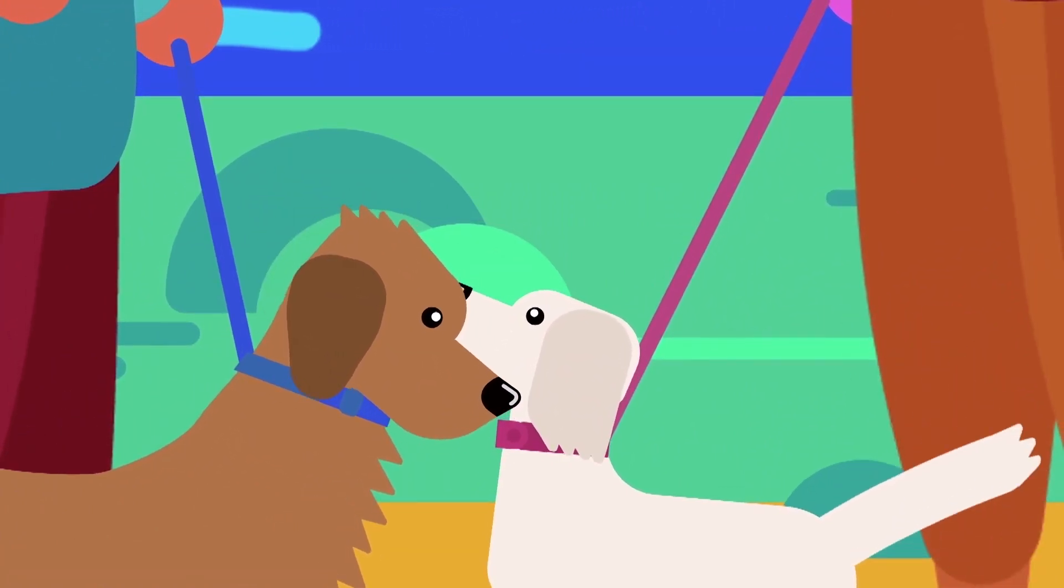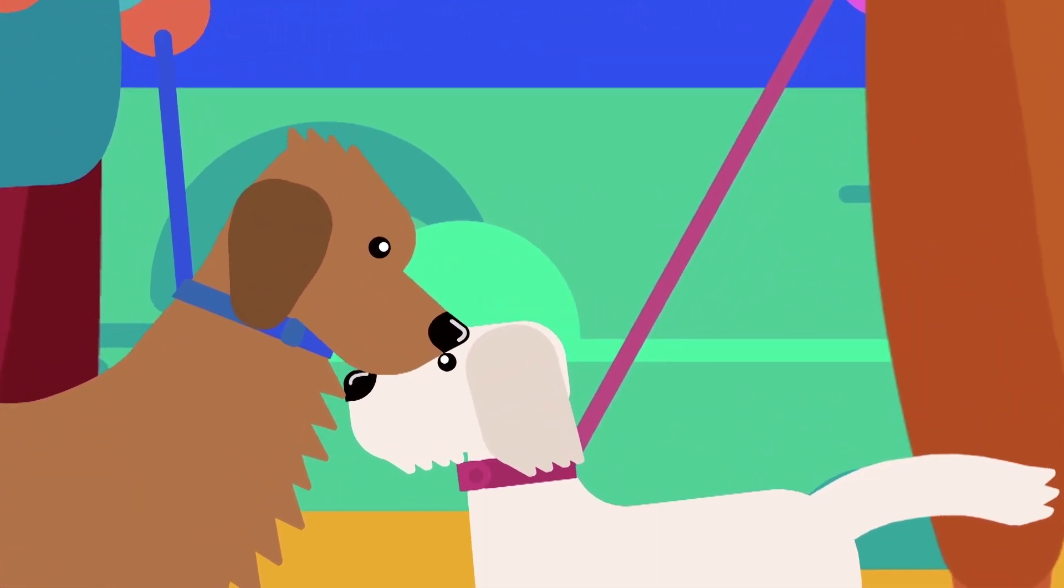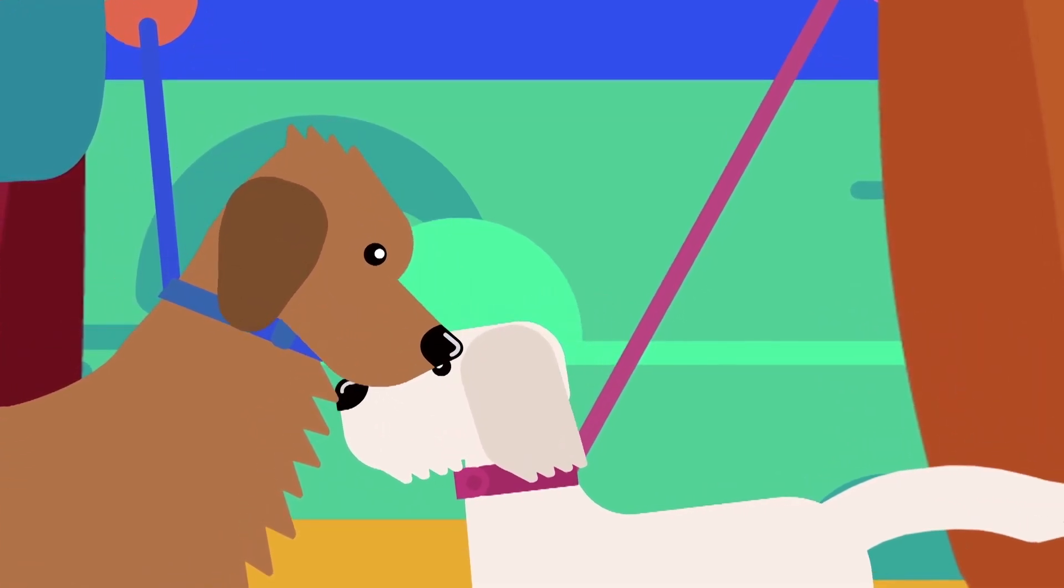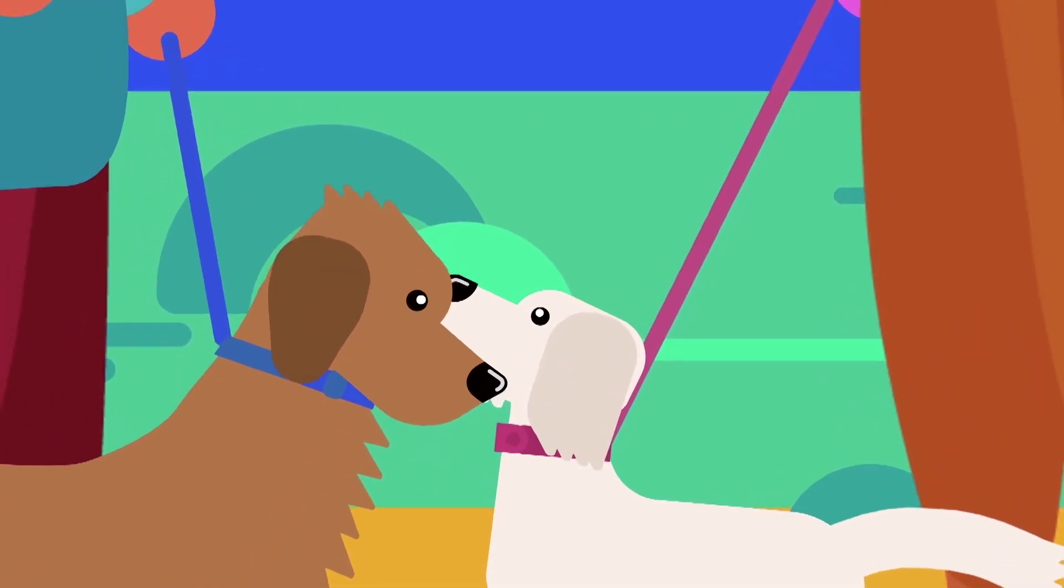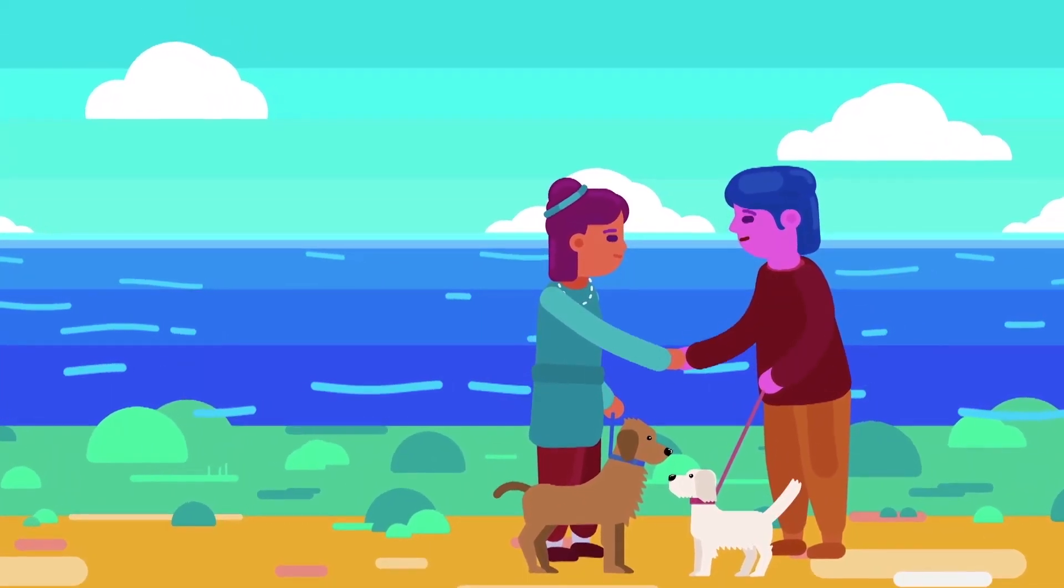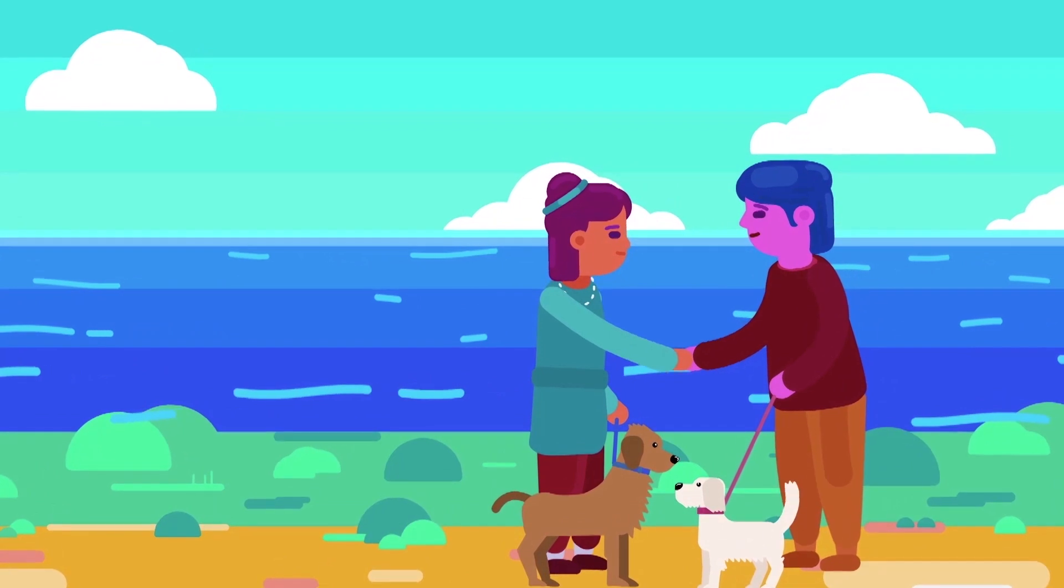When dogs meet, they spend a lot of time sniffing each other. We humans unconsciously smell our hands after shaking hands with strangers, an act that is thought to give us information about others. Body odor can influence mate choice and also communicate anxiety or aggression to others.